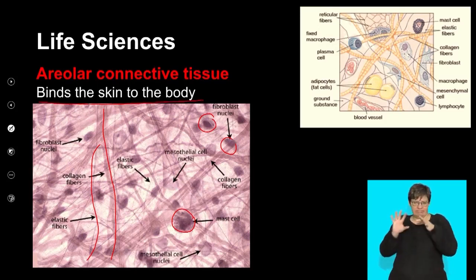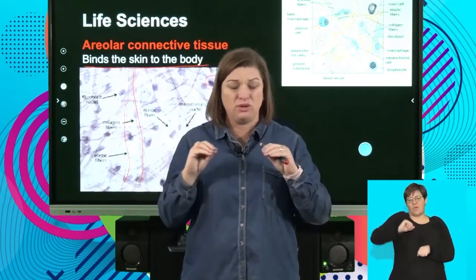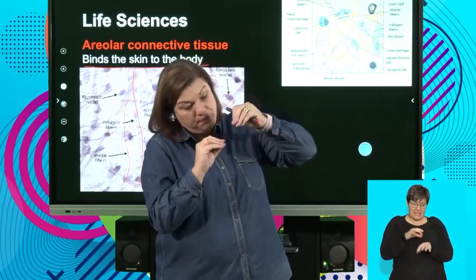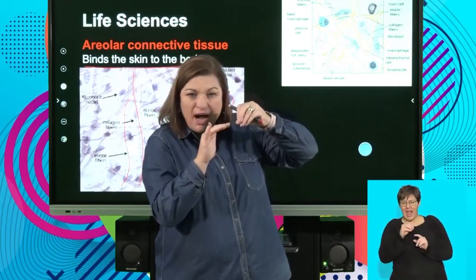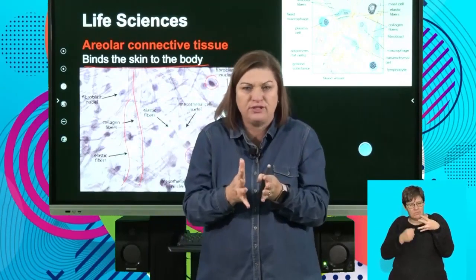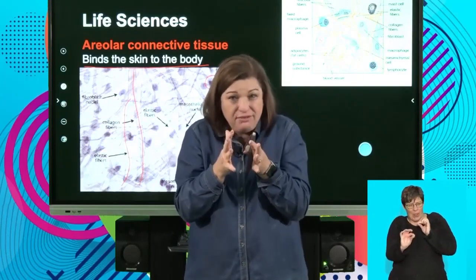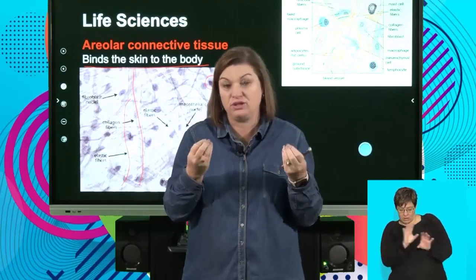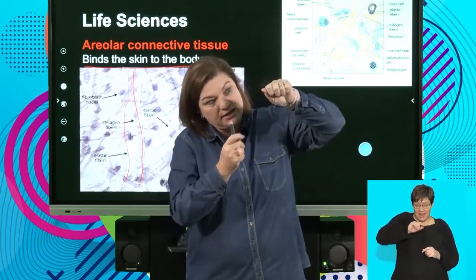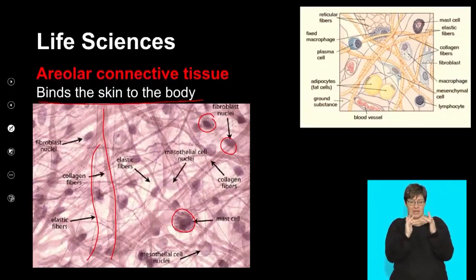This layer binds the skin to the body and binds all the different organs. I call it the 'buruvos layer' — when you look at a raw chicken wing and pick up the skin, underneath is a white see-through layer that you can barely see, but you know it's there. It's thin and it's keeping everything in. Next time you handle a chicken wing, take the skin off and look underneath. We call this loose connective tissue because the fibers are loosely arranged and you can see a lot of the matrix.